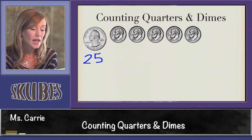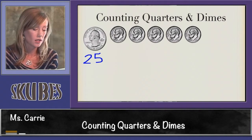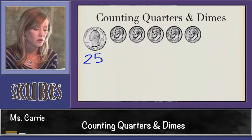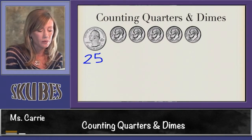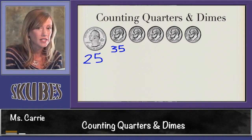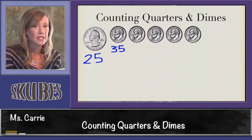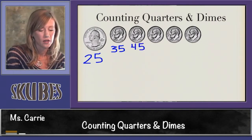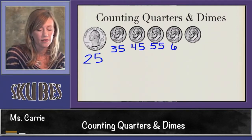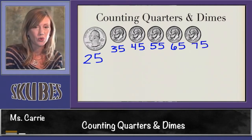The digit in the tens place is going to go up one. So let's count this together. A quarter is worth 25. One more dime would make 35 — the five stayed the same but the tens place went up one. The next would be 45, 55, 65, 75. This group of coins is worth 75 cents.